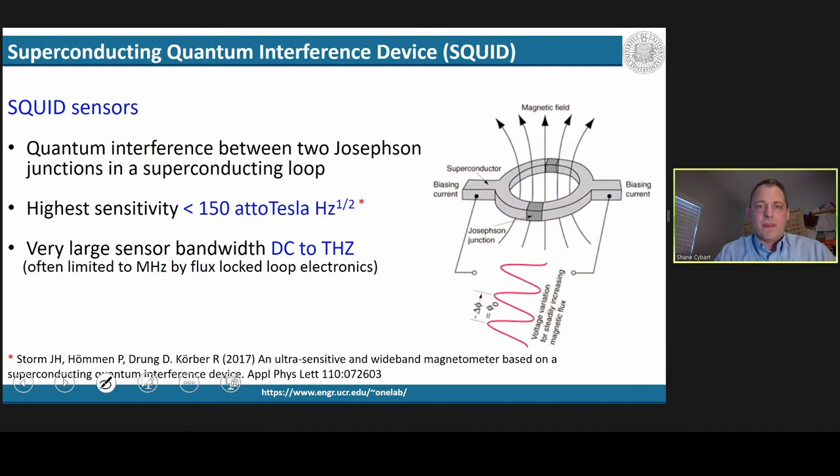The SQUID sensor combines two Josephson junctions onto a superconducting loop, and we can put voltage leads across the terminals. As magnetic field changes inside the loop, we get an oscillatory voltage with a period of the flux quantum, and very sensitive magnetometers can be developed using this technique.